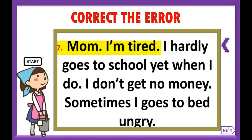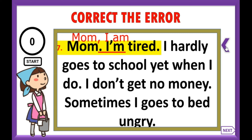Next sentence: 'Mom, I'm tired.' We have two errors. 'I'm' — you may say that is not an error, but remember you are not talking to someone face to face; we are writing a letter. So whenever you're writing a letter, you need to spell out your contraction: it should be 'I am.' And remember, there should be a comma after the word 'mom.'